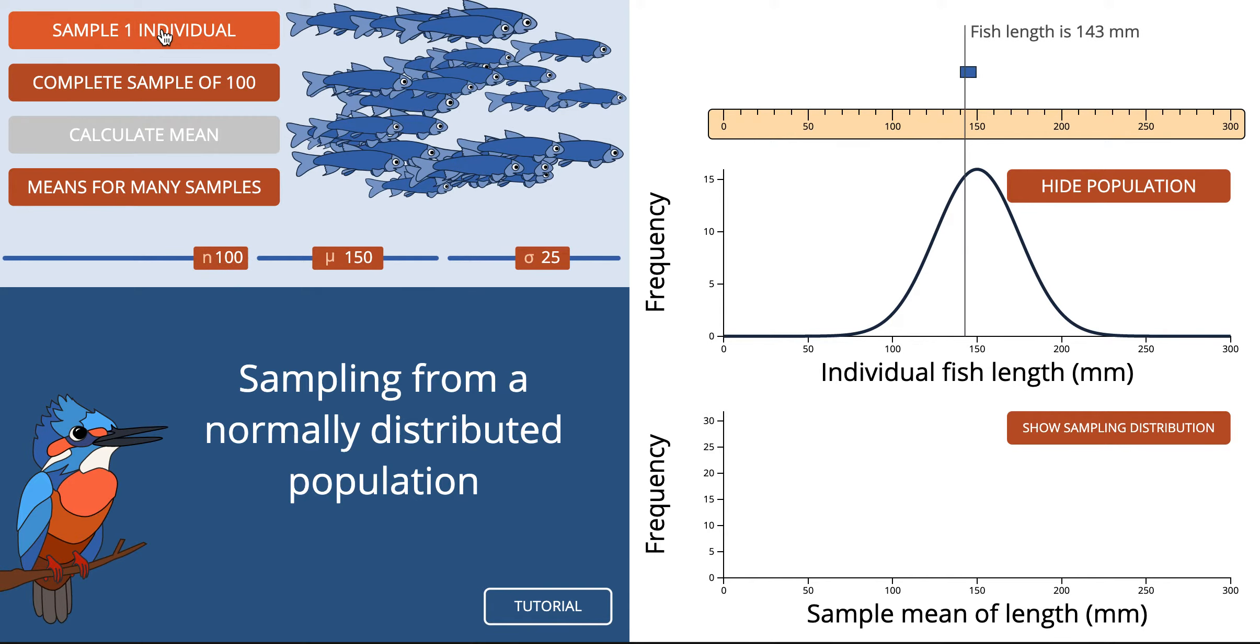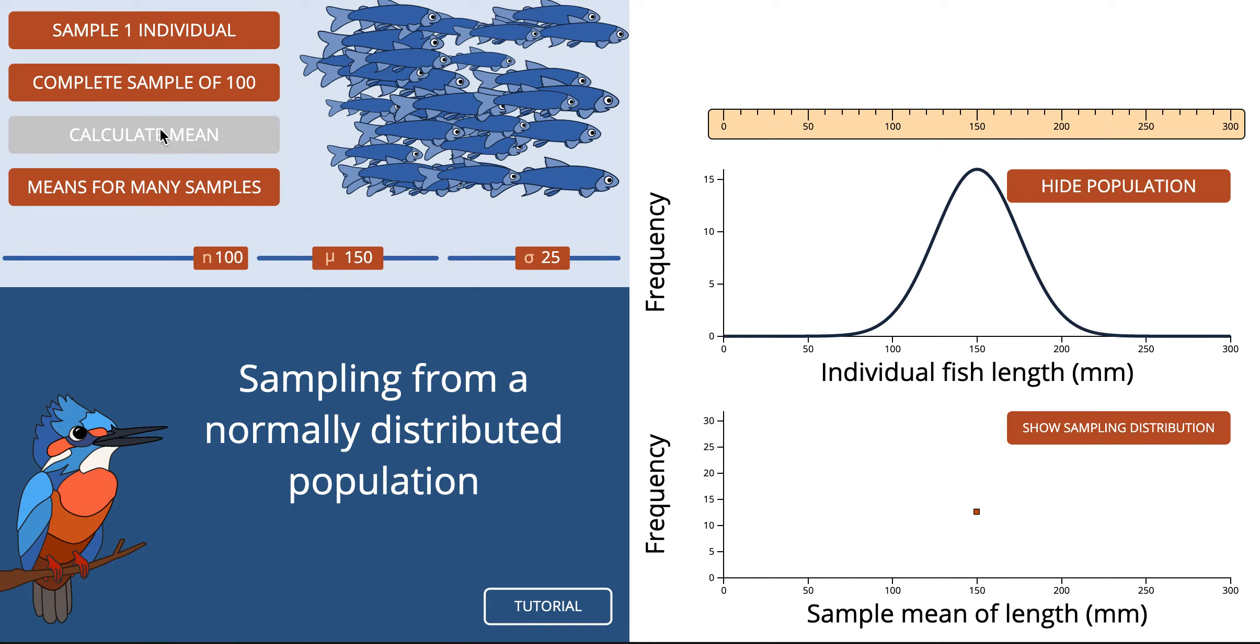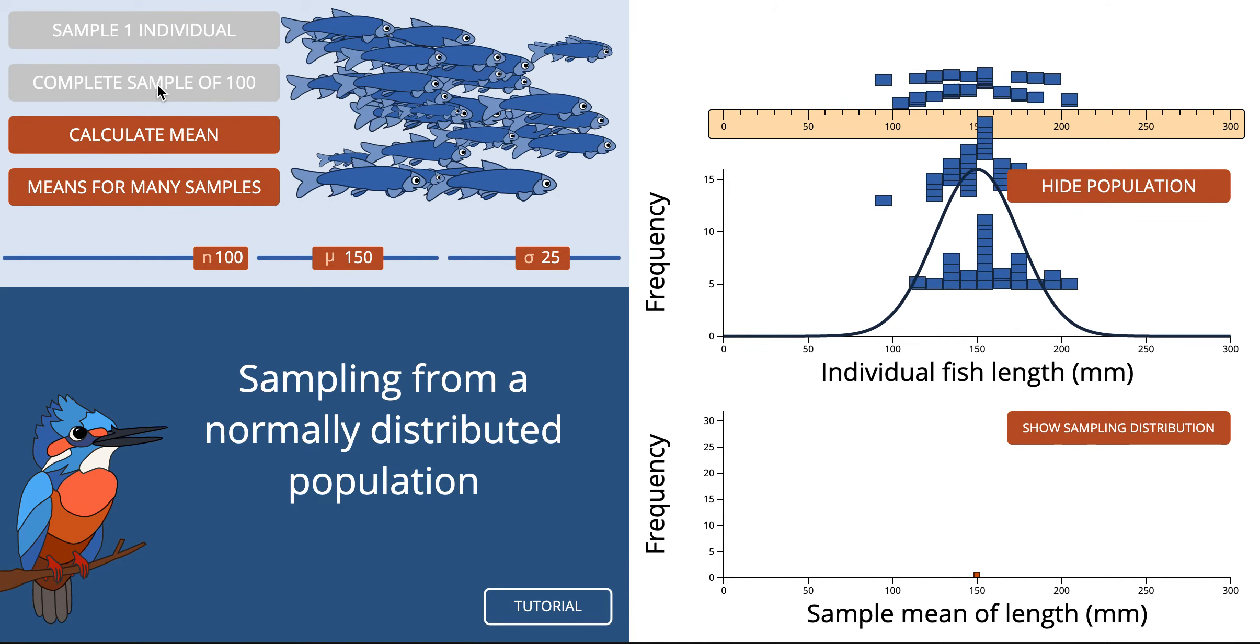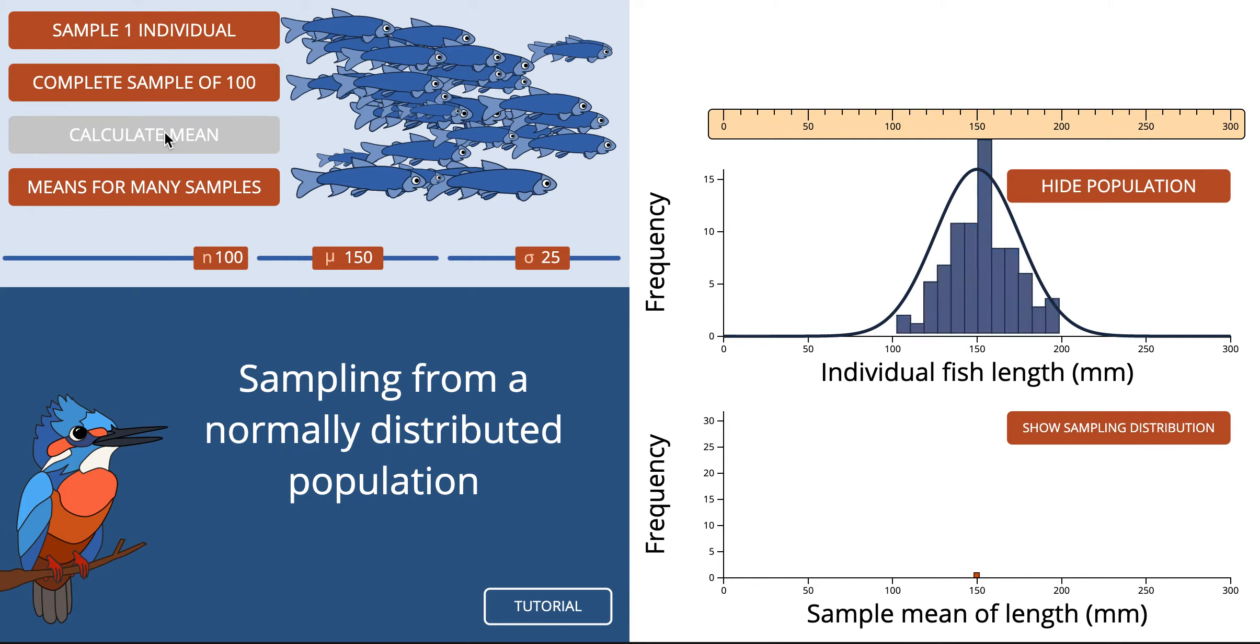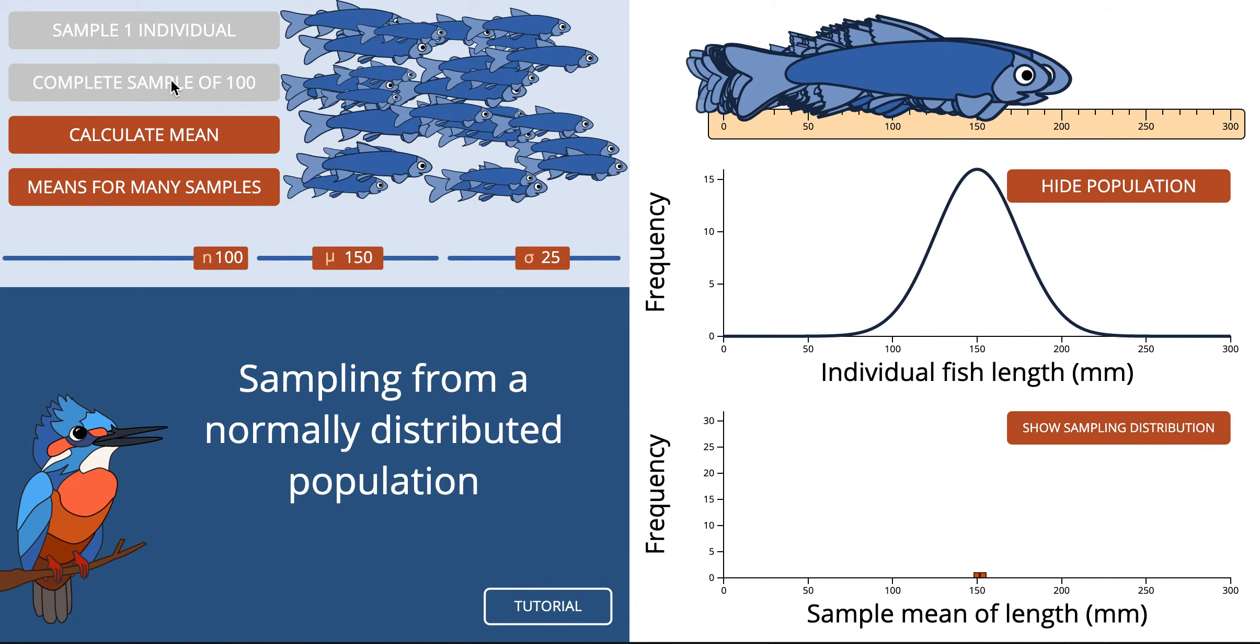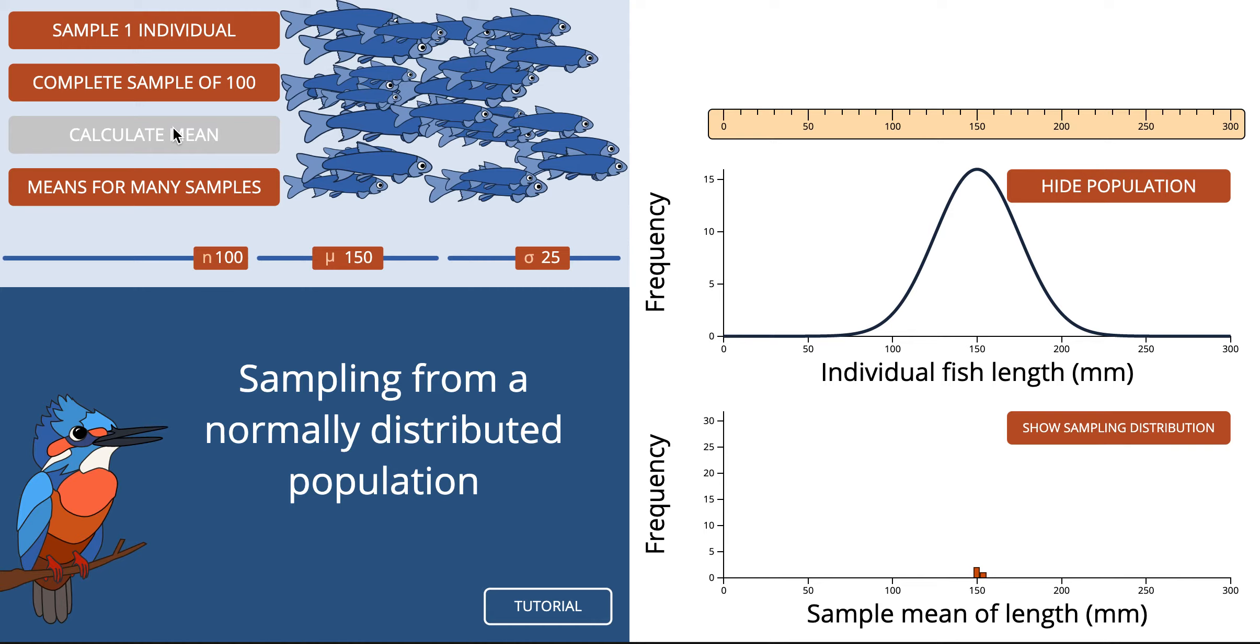Now if I finish the sample of a hundred fish, there they all are, as we expect, then I calculate the mean. Now that mean is actually bang on. And if I do another sample of a hundred, calculate the mean of those hundred, can you see that, you've probably guessed it, that the bigger the sample size, the closer the mean of the sample will be to the actual mean of the entire population.